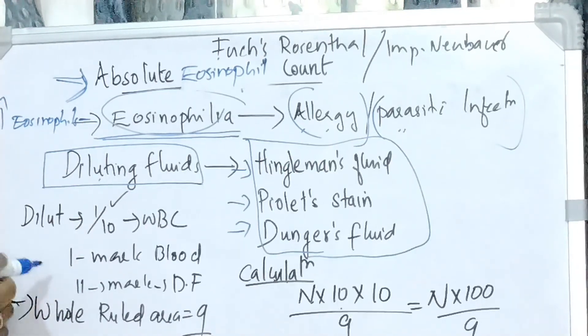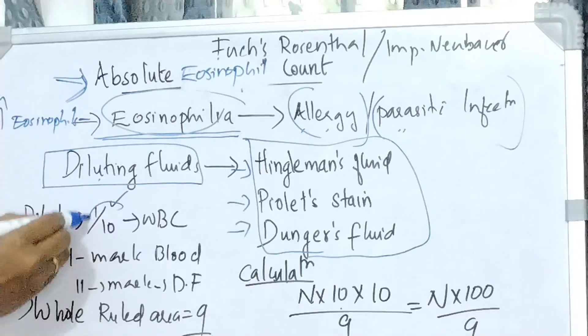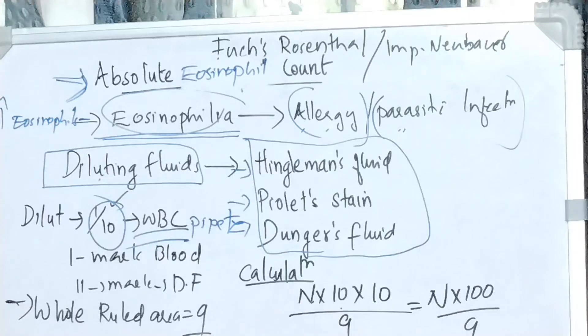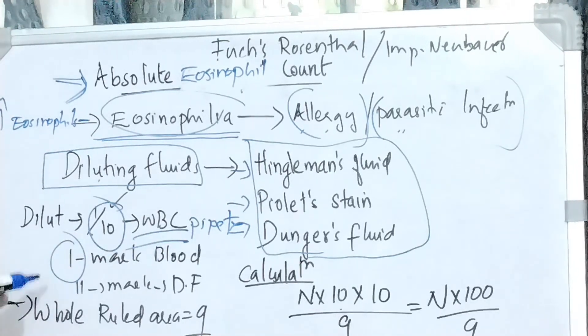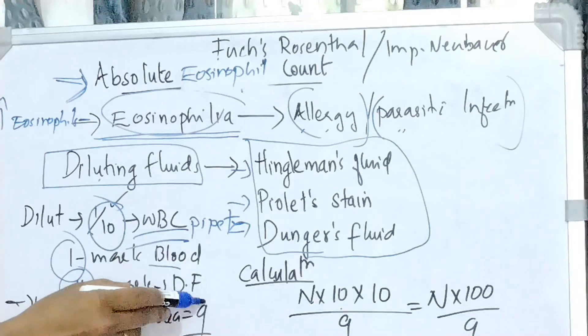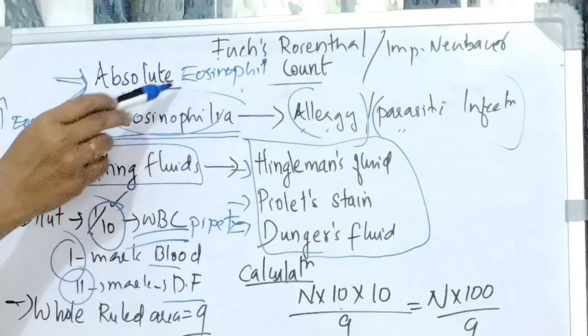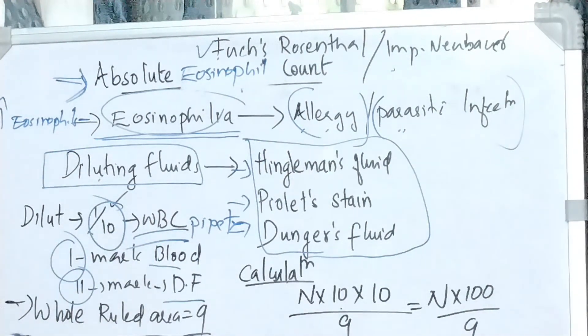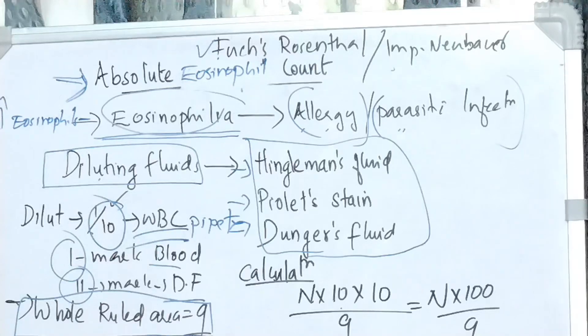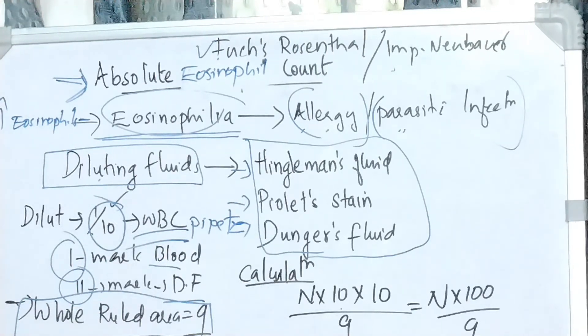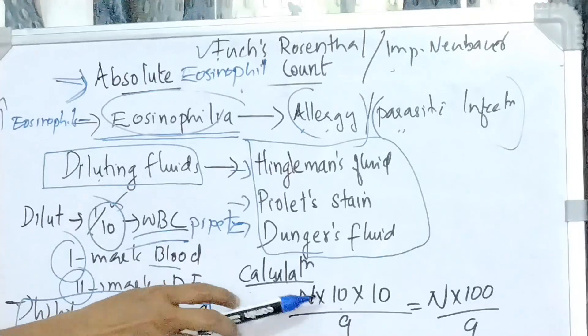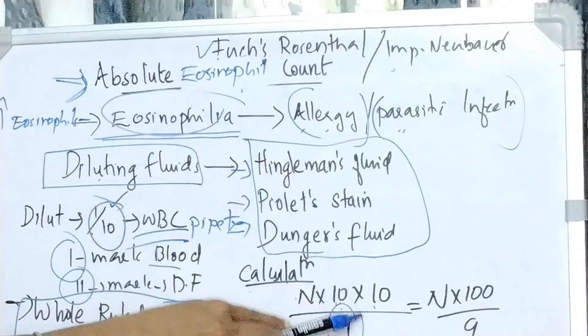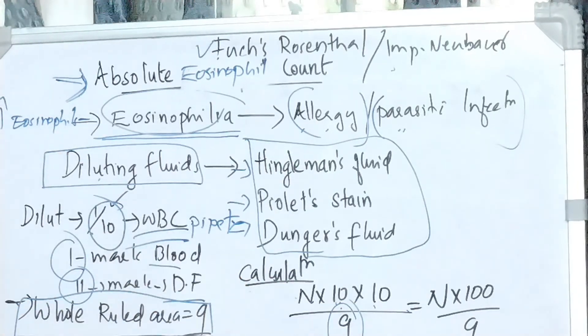We are using WBC pipette for eosinophil count and the dilution is 1 in 10. As the number of eosinophils are less, we have to take a smaller dilution. That is 1 in 10. Up to 1 mark, blood has to be taken and up to 11 mark, diluting fluid has to be taken. The counting should be done within 15 to 30 minutes after dilution. Fuchs-Rosenthal or Improved Neubauer counting chamber can be used. The number of cells present in the whole ruled area, that is 9 mm square area has to be counted. As the number of eosinophils are too less. So calculation is like N times dilution factor 10 times depth factor 10 divided by area counted 9. So that is equal to N times 100 divided by 9.